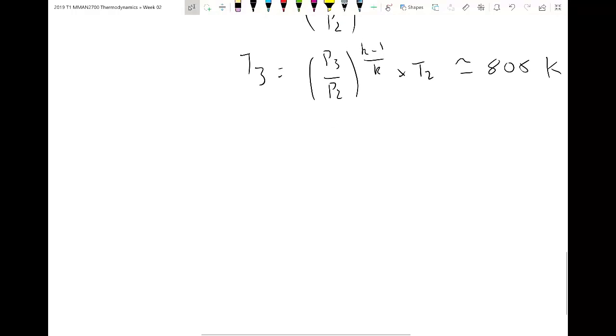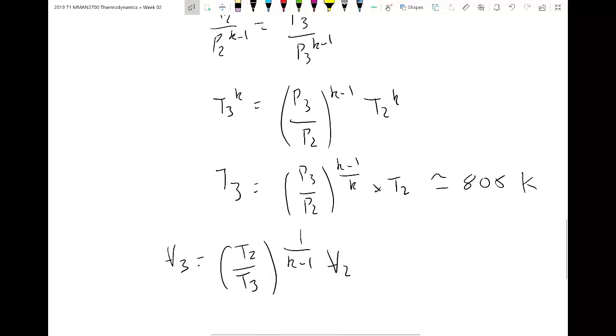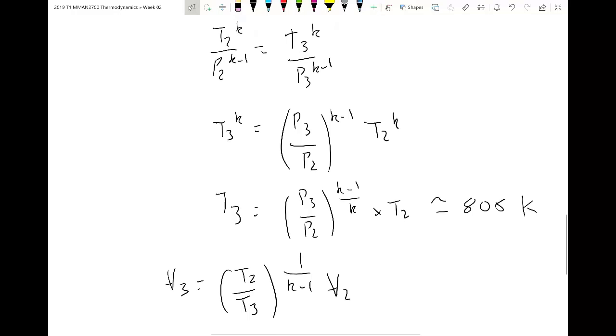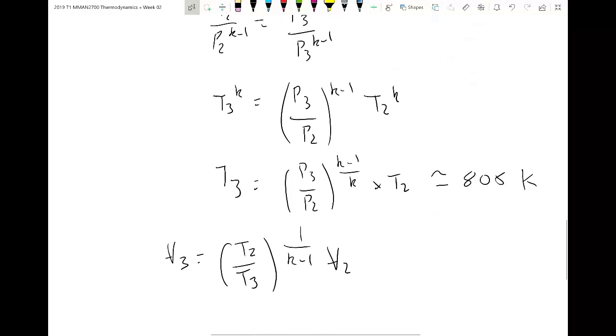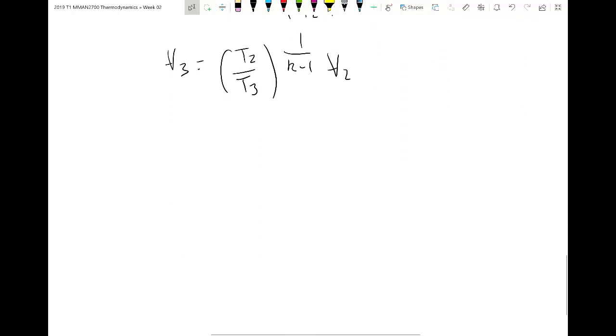So we're going to do a very similar process with finding the volume for state point 3. So the derivation for the equation to relate volume and temperature for this process is essentially the same, just slight differences. So I might just brush over that this time. So volume 3, temperature 2, temperature 3, on 1 K minus 1 V2. So that was just going through the same process that we went here, but instead of substituting in the volume, I substitute in the pressure, and I should get that value out there. You can try it yourself if you want at a later stage.